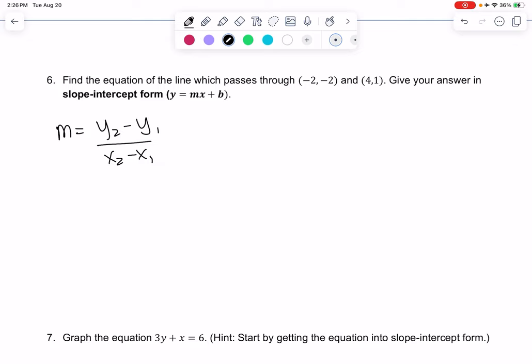We'll call our points x1, y1, x2, y2 and plug those numbers in. We're going to do 1 minus negative 2, so minus from the subtraction and then the other minus from the negative 2. Then we'll do 4 minus negative 2, same idea.